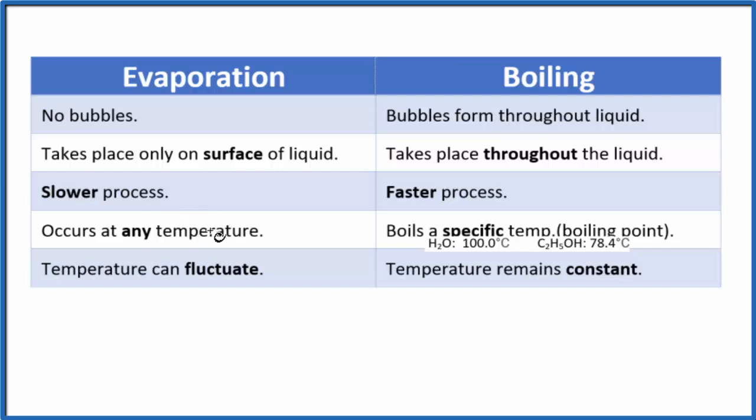Evaporation occurs at any temperature, and that temperature can fluctuate with the surroundings. As it gets warmer or colder, evaporation still will take place. For boiling, once we hit, say, that hundred degrees with water at standard pressure, the temperature remains constant. It doesn't get any hotter. Water won't boil higher than a hundred degrees Celsius.